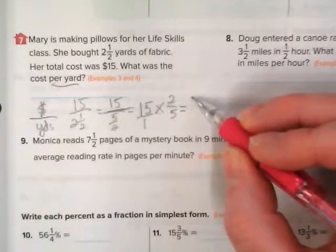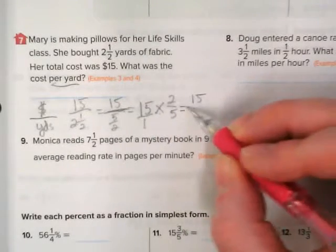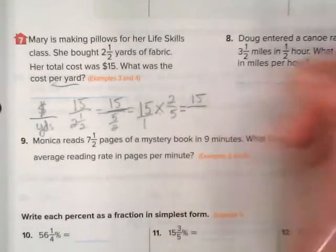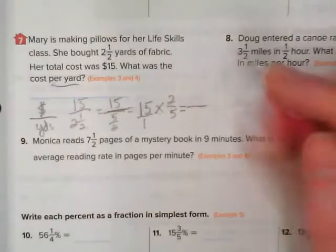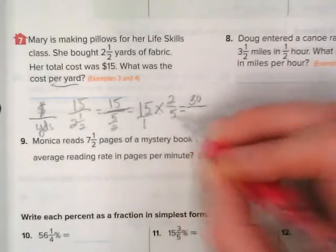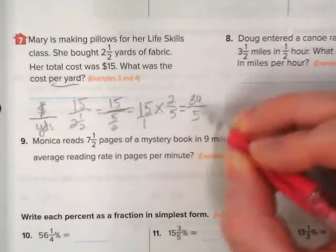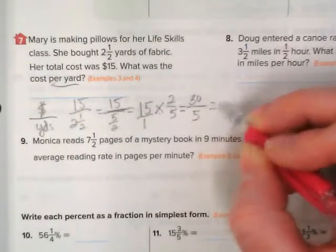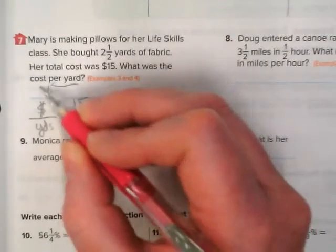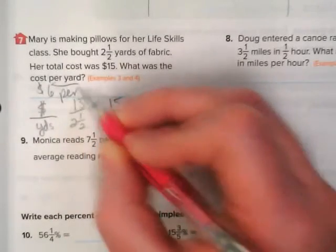15 times 2 would be 30. 1 times 5 would be 5. 30 divided by 5 equals 6. That means it's $6 per yard.